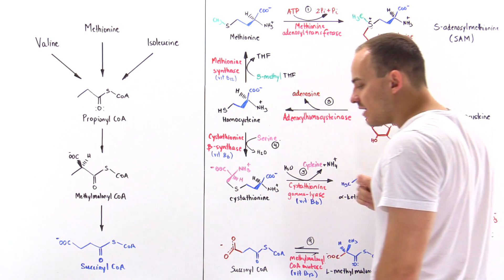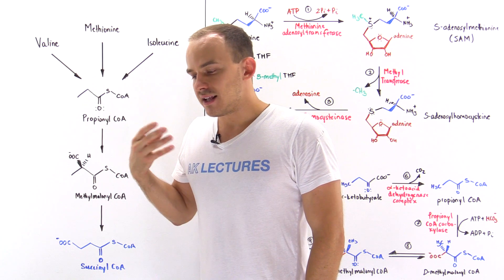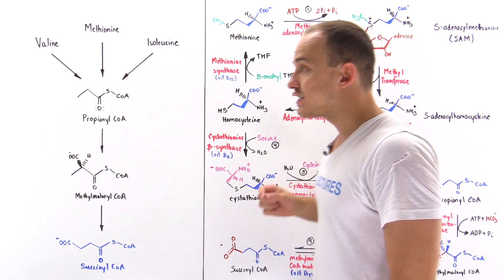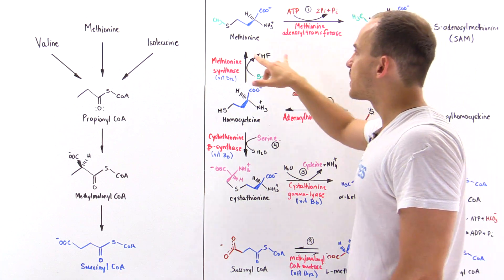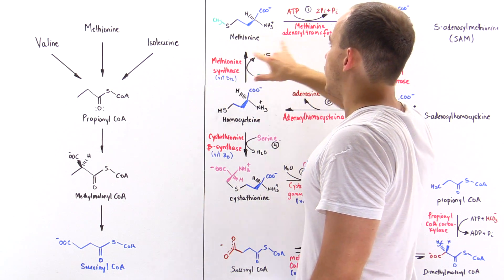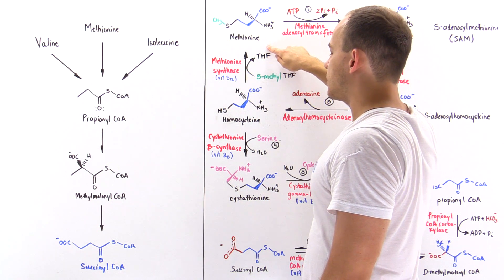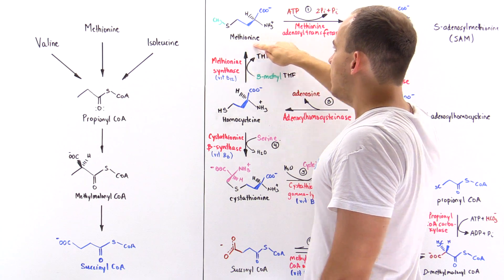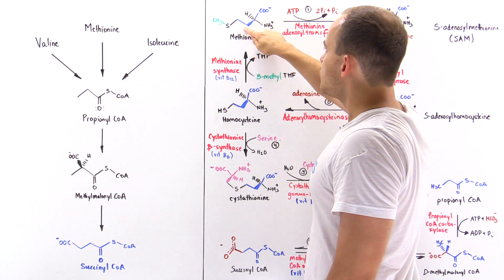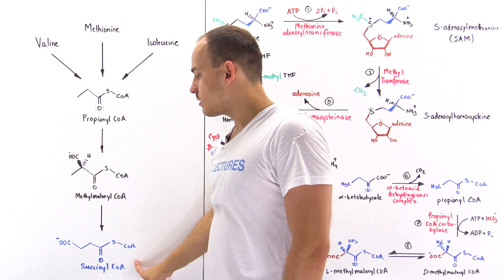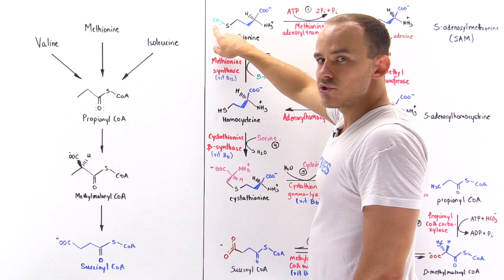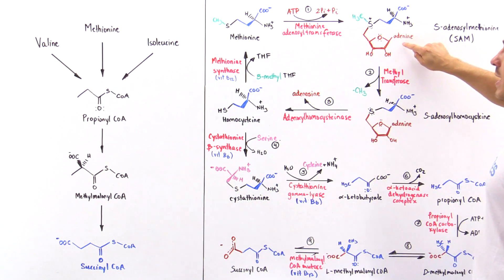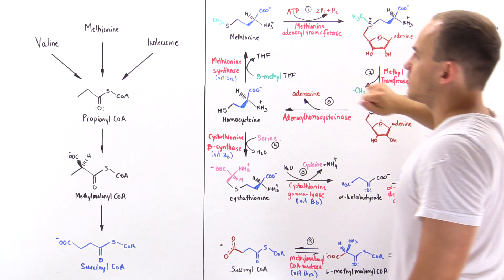Step number one is actually a very important step because it allows us to generate an important molecule that is used by the cells of our body. We begin with our methionine. Within methionine, the blue section will ultimately end up being part of the succinyl coenzyme A, and the green section will be important in a molecule we'll see in just a moment.